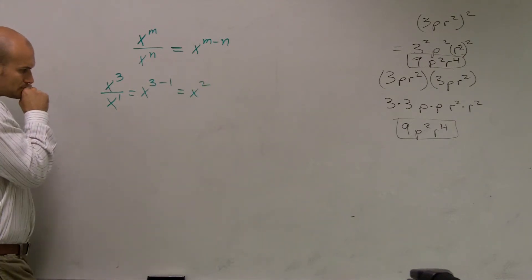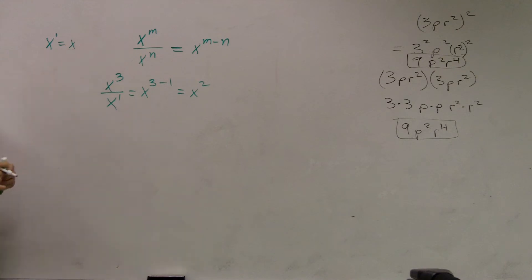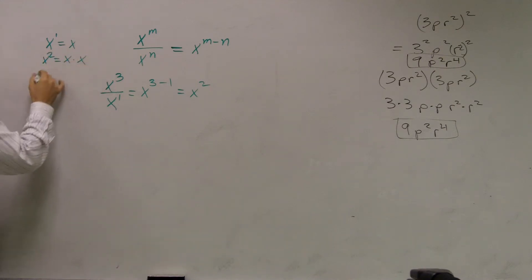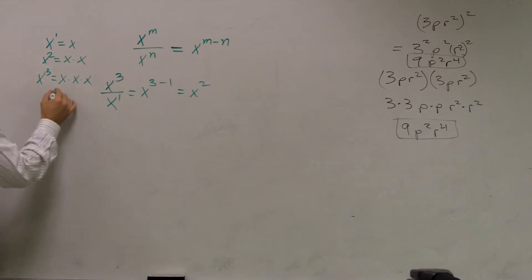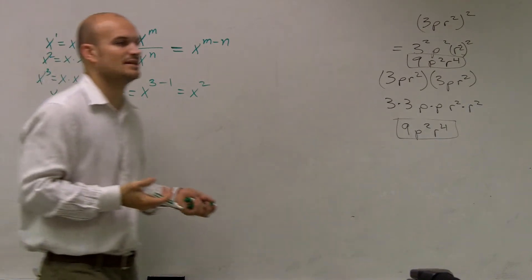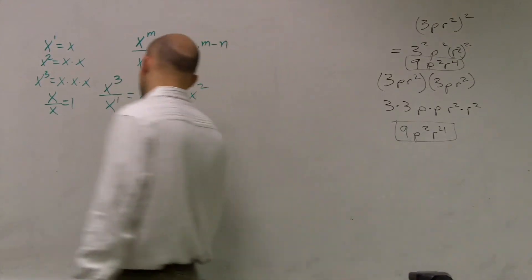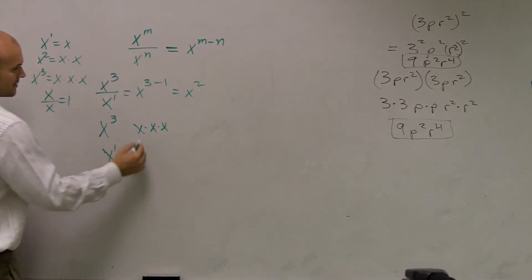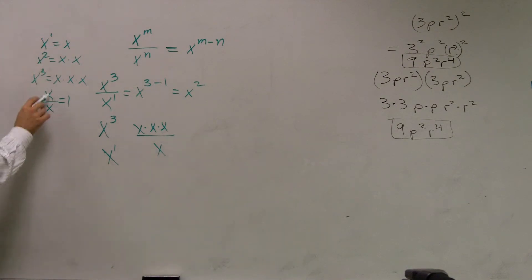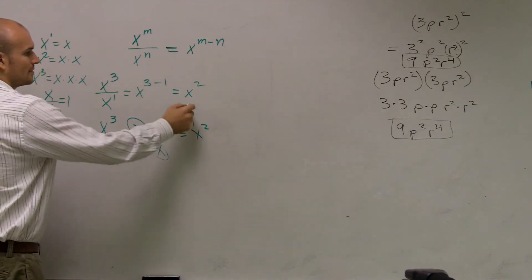And the reason why this works, Josh, is because if I have x cubed, x to the first equals x, x squared equals x times x, so x cubed equals x times x times x. You should also know that x divided by x equals 1 — anything divided by itself equals 1. So I can rewrite x cubed as x times x times x, over x to the first, which is just x. Since x divided by x equals 1, those two cancel out, and what am I left with? x times x, which is x squared — same answer.